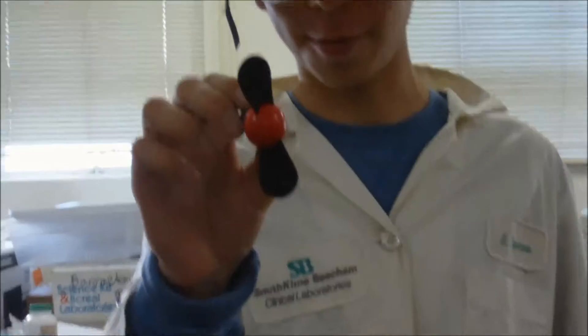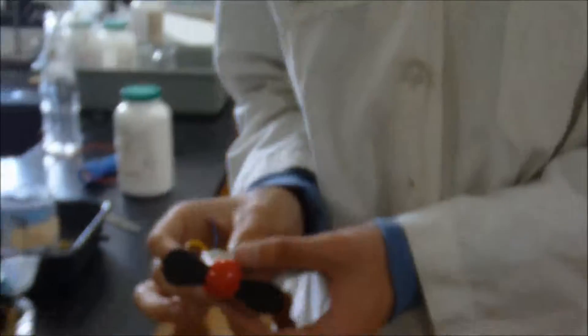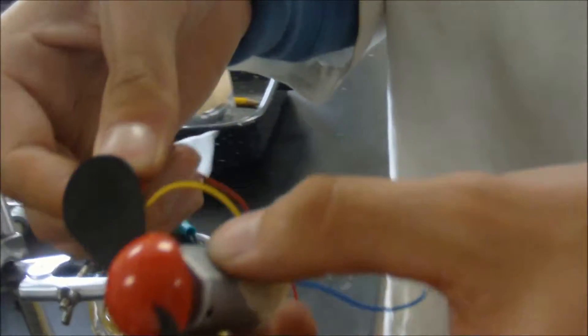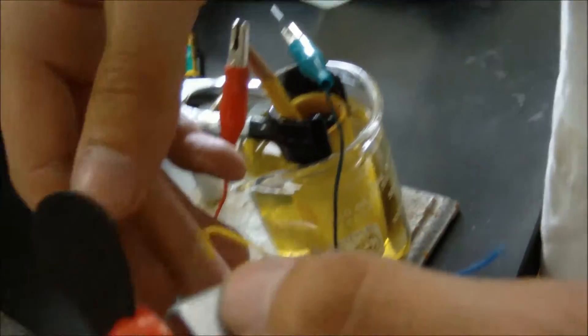This is a fan from one of the candy jogger things, and hopefully we should be able to power it. This is the cathode of the reaction. We put this to the yellow.